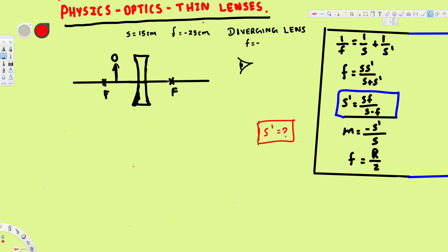Let's try this problem. We have a diverging lens with a focal length of negative 25 centimeters — for a diverging lens the focal length is always negative. We also have an object placed 15 centimeters from this lens, and the question is asking us to find the image distance.